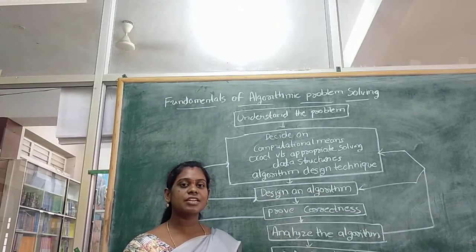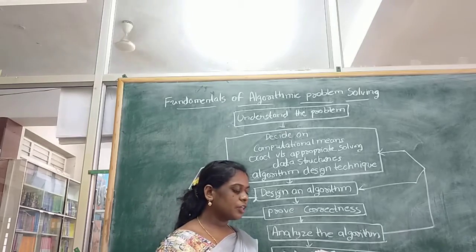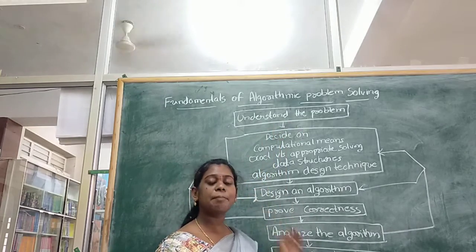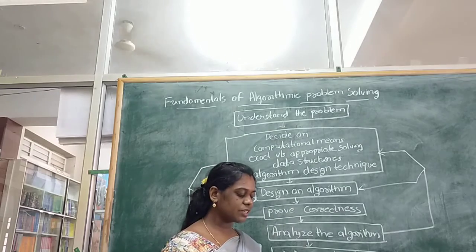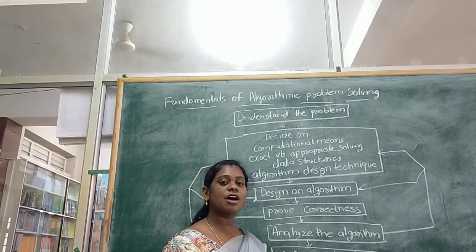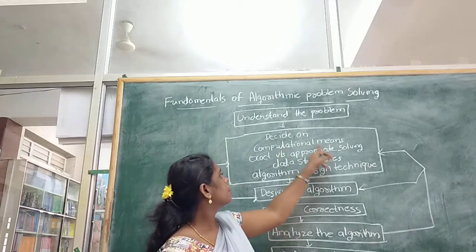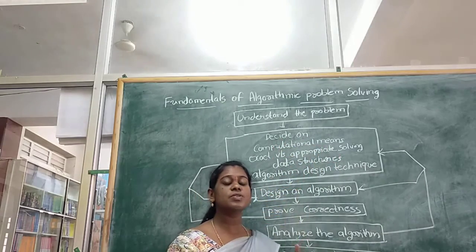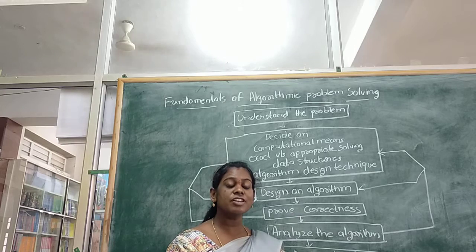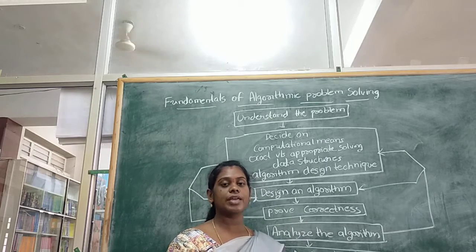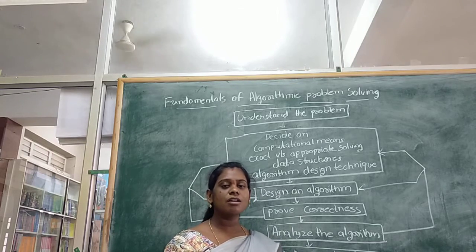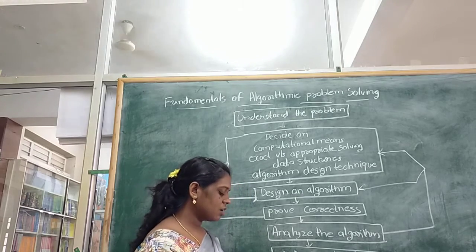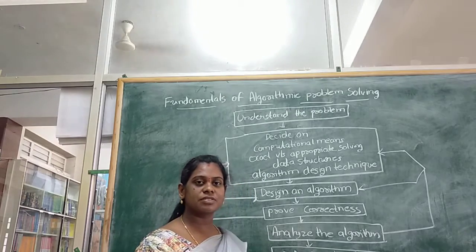After understanding the problem, you have to ascertain the capabilities of the computational device. So the second step is to decide on computational means — you have to check the device on which you are going to execute the algorithm. There are two types of algorithms.